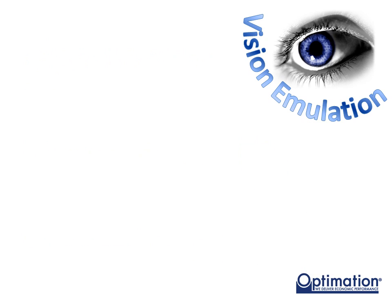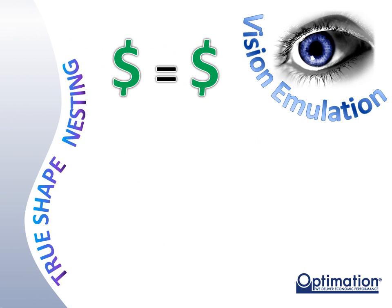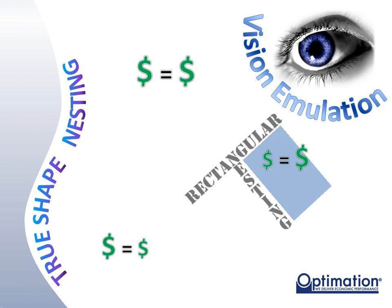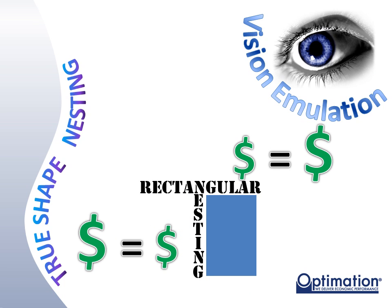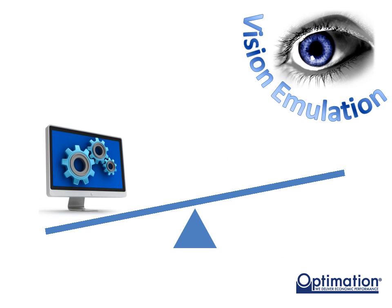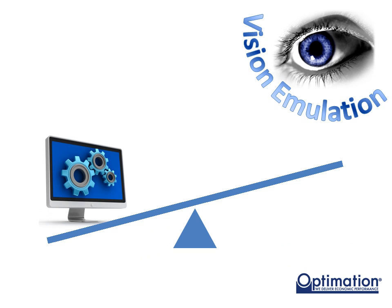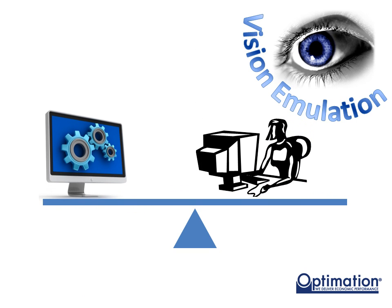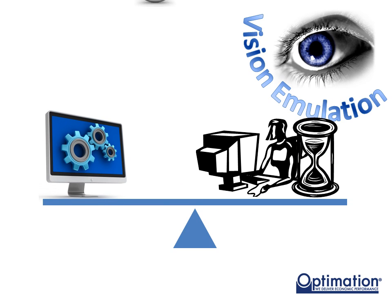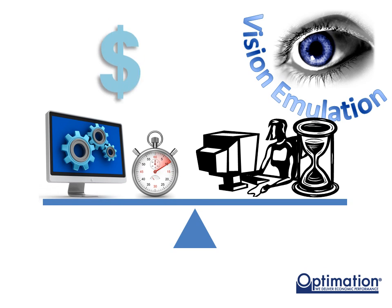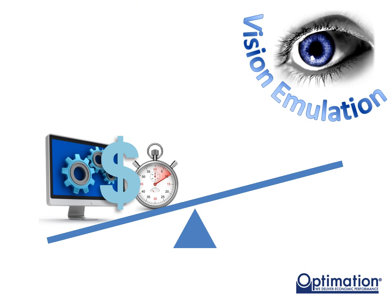While not typically more expensive than most true shape systems, vision emulation systems are more expensive than most rectangular nesting solutions. Also, these systems tend to come with many automation features that may be overkill if you wish to do a lot of manual nesting or if you have the desire and time to edit your nest by hand. However, if you have a high demand environment with average to complex parts, then the cost savings and level of integration provided by a vision emulation cost-driven system may result in the best possible cost savings.